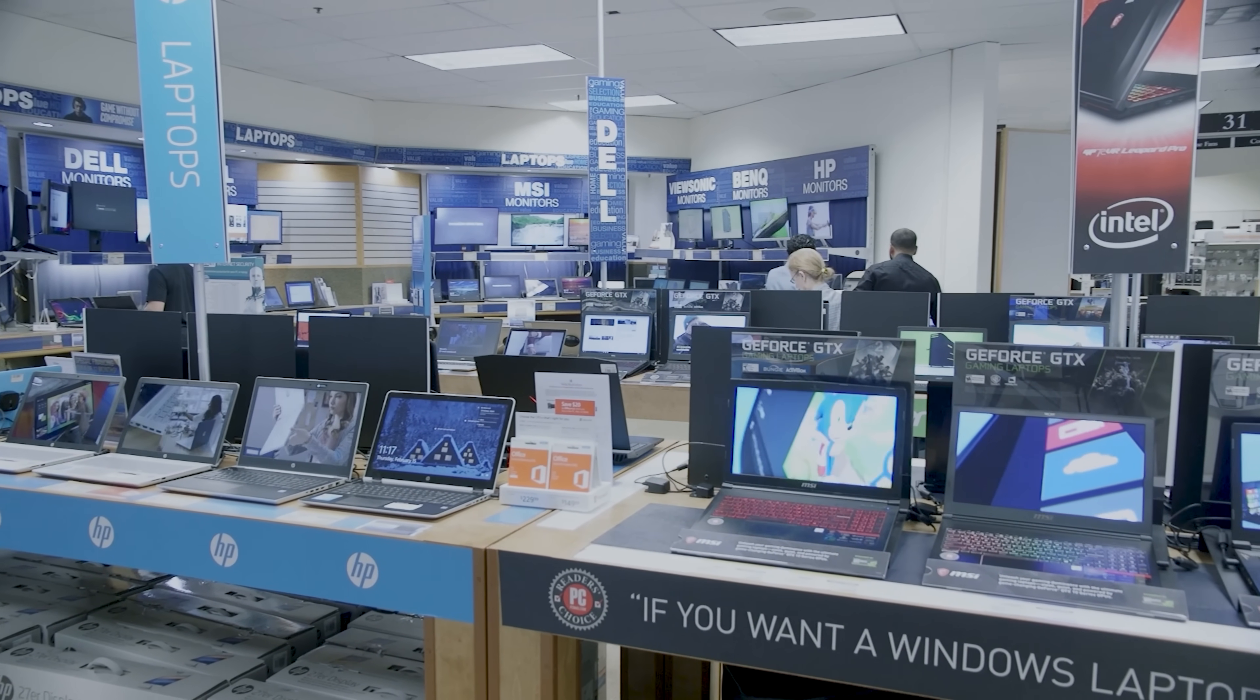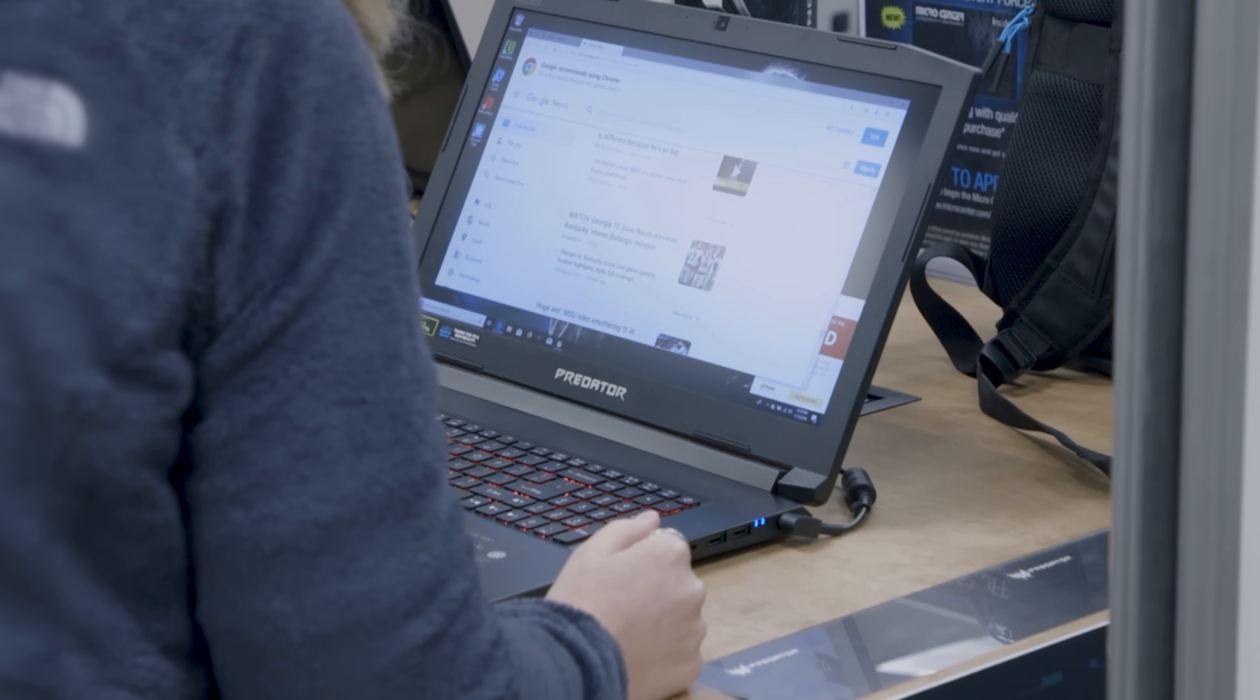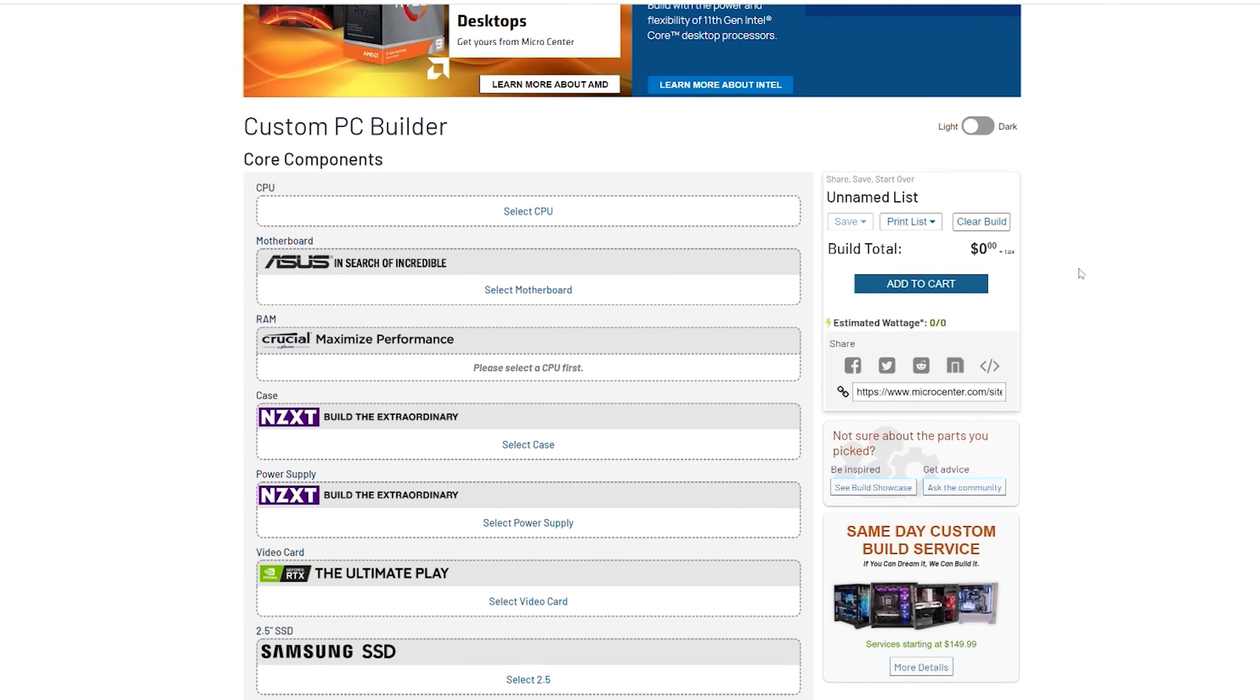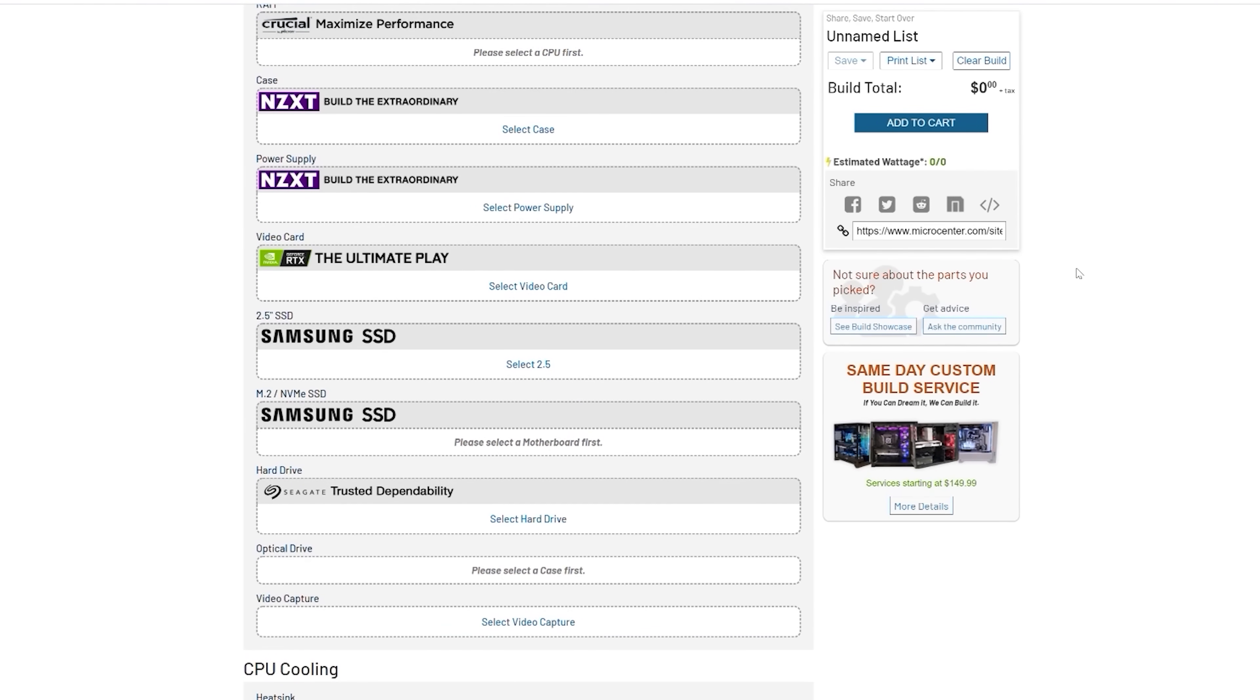Also, let's say you want to build your own computer as opposed to just buying one out of the box. Well, you have to be really careful to make sure that everything's compatible and that it works well together. So you can use Micro Center's online PC builder tool to make sure that all the parts that you buy are compatible and work together.